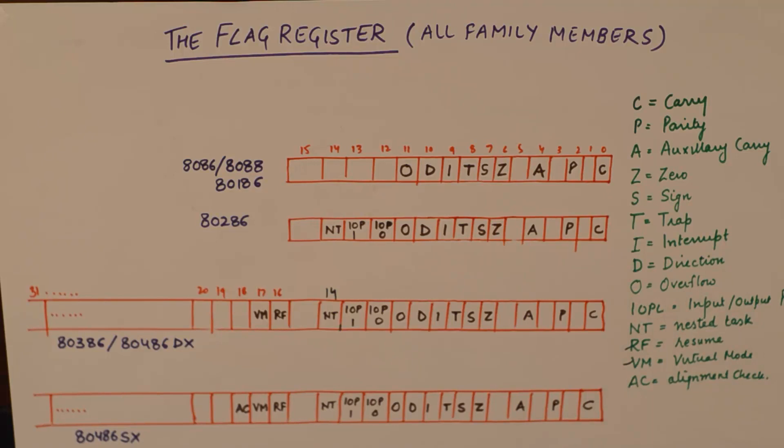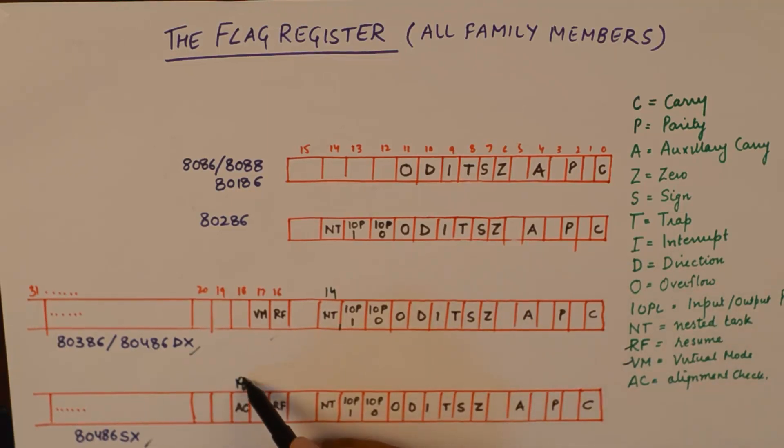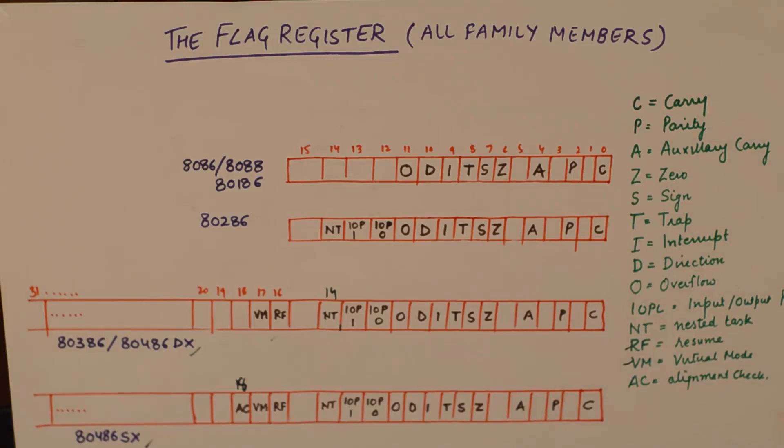Then finally we go on to 80486SX. By the way, 80486DX used to have this flag register and the 80486SX has an additional flag which is alignment check. So this alignment check gets its position at bit number 18. An interesting fact, nothing changes. And you can see everything is upward compatible. All the flags that were there in the previous architecture of the microprocessor, they were kept at the same position. So Intel has done a marvelously significant job here in upgrading the flag registers.